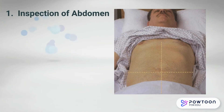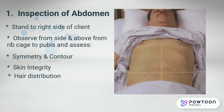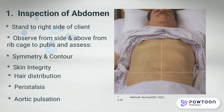When inspecting the abdomen, stand to the right side of the client if possible. We want to observe from the side and from above the ribcage, all the way down to the pubis. We'll be looking for symmetry and contour, the skin integrity, the hair distribution, any peristalsis, and of course, aortic pulsations.